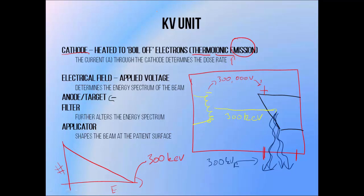If we want to alter the energy of the photon beam, we can change the voltage, since this will change the maximum photon energy of the beam, but we normally do this in conjunction with beam filtration. We do this by passing the beam through a square of metal, usually aluminium or copper, positioned below the beam exit window. This removes lower energy components of the beam spectrum, increasing the average energy slightly, which is useful for treating anything that isn't the actual surface of the skin.